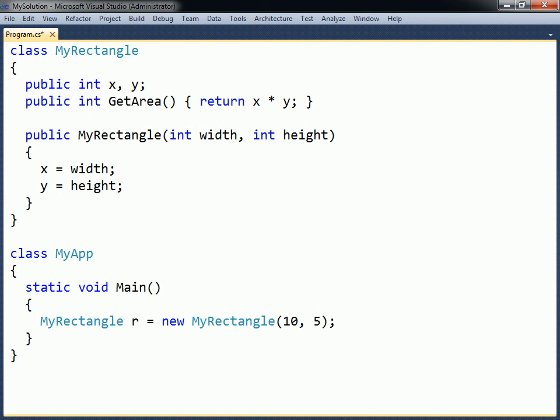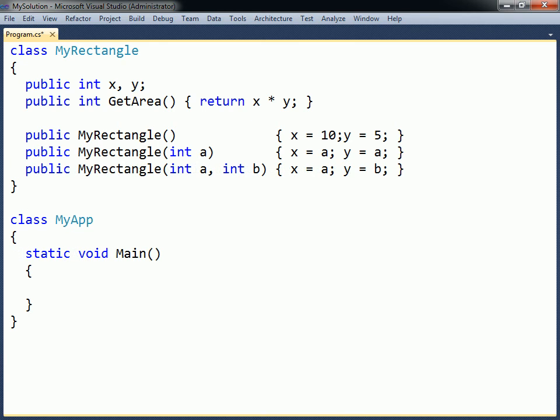Inside the constructor, as well as in other methods belonging to the object, a special keyword this can be used. This keyword is a reference to the current instance of the class. Suppose for example that the constructor's parameters have the same names as the corresponding fields. The fields could then still be accessed by using the this keyword, even though they are overshadowed by the parameters.